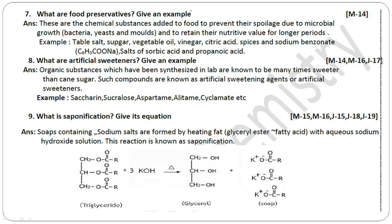What are food preservatives? Give an example. These are chemical substances added to food to prevent their spoilage, allowing food to be kept for a long time. Examples include table salt, sugar, vegetable oil, vinegar, citric acid, spices, and sodium benzoate.